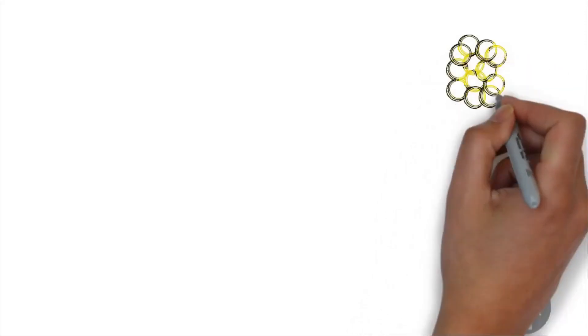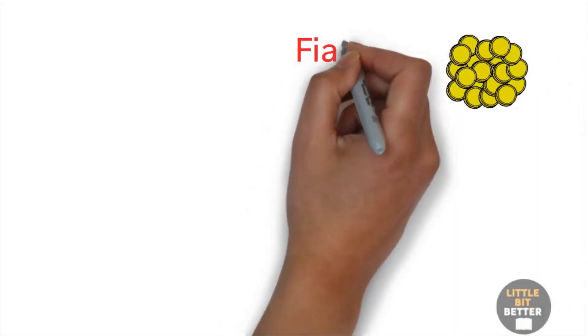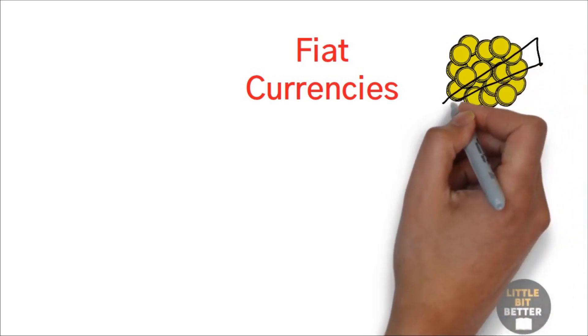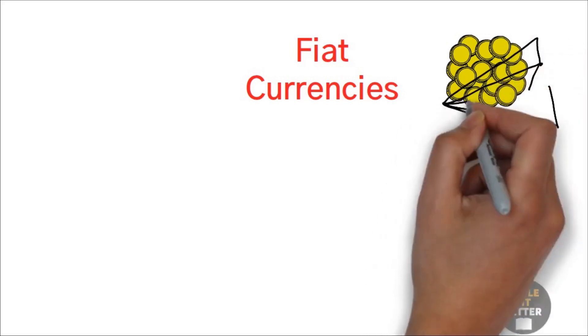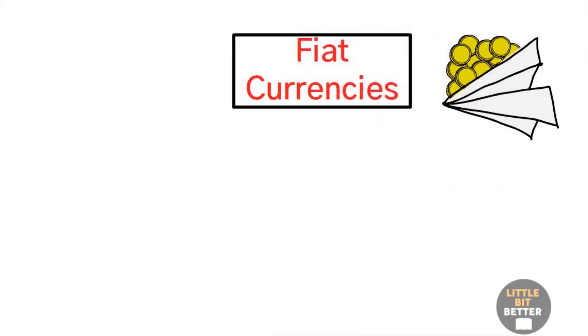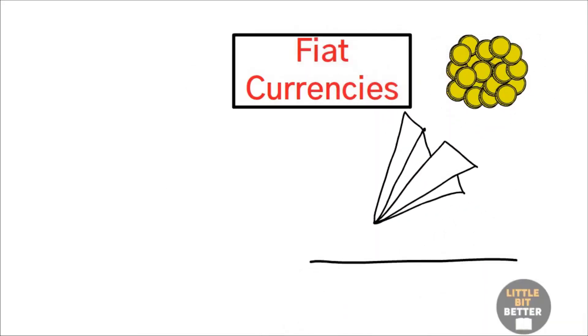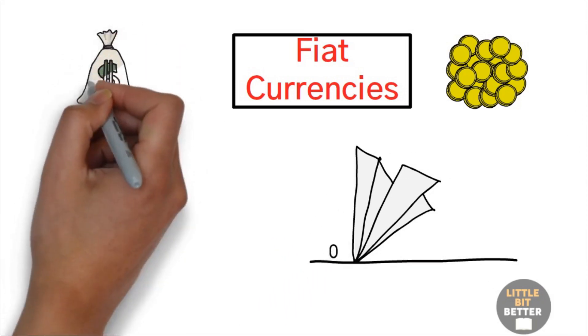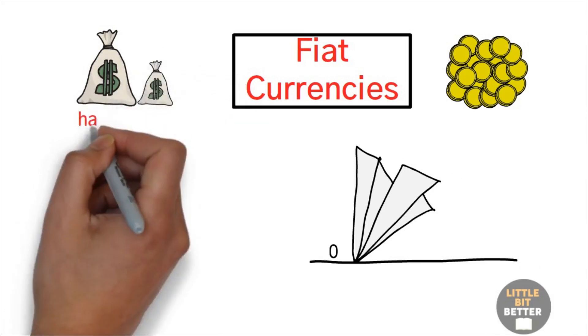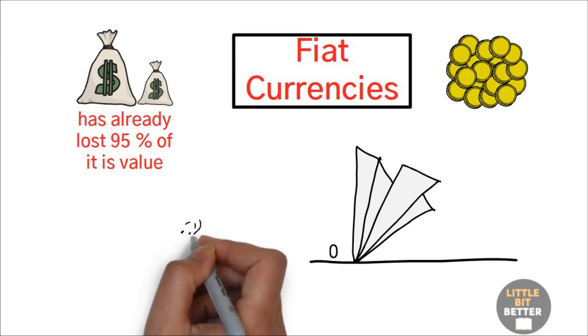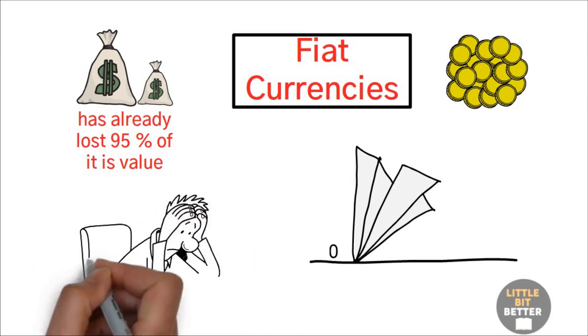Another dangerous thing is that almost all the world currencies are fiat currencies, which means they are just paper. There is no gold or other thing that is backing them up. And history shows that all fiat currencies eventually return to their original value, which is zero. There is no single evidence showing that the same thing will not happen to the dollar. The dollar has already lost 95% of its value. How long do you think it will take to lose the remaining 5%?